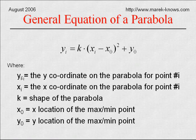Now the y value and the x value are the coordinate values on the parabola as you're moving. The k value is a shaping value that is used to determine how much the parabola opens or closes as well as which direction it opens. The x naught and the y naught value are used to determine where the maximum or the minimum value of the parabola is located.